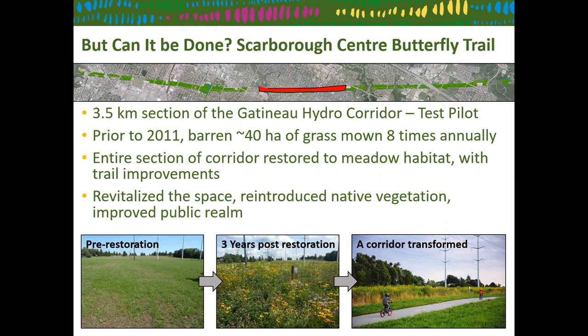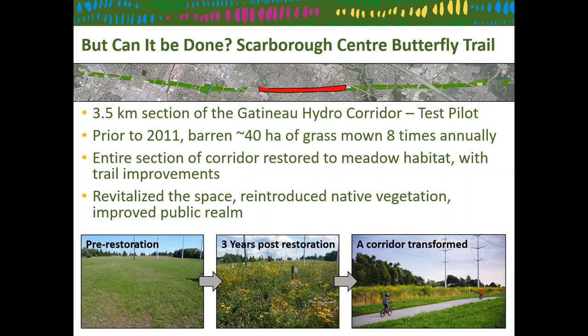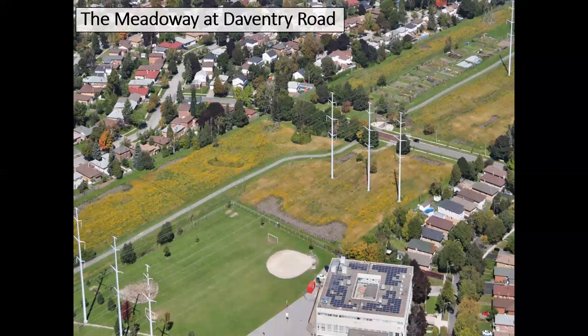Through a generous donation by the W. Garfield Weston Foundation and our partners — the City of Toronto and Hydro One — we completely transformed the space. The images really convey the transformational opportunity: the bottom left shows a typical corridor pre-restoration; the center image shows that exact same location three years later; and the bottom right encapsulates the whole Meadoway project — an active transportation component with children using the space set within a restored meadow habitat, while still functioning for its primary purpose: transferring power to the city of Toronto.